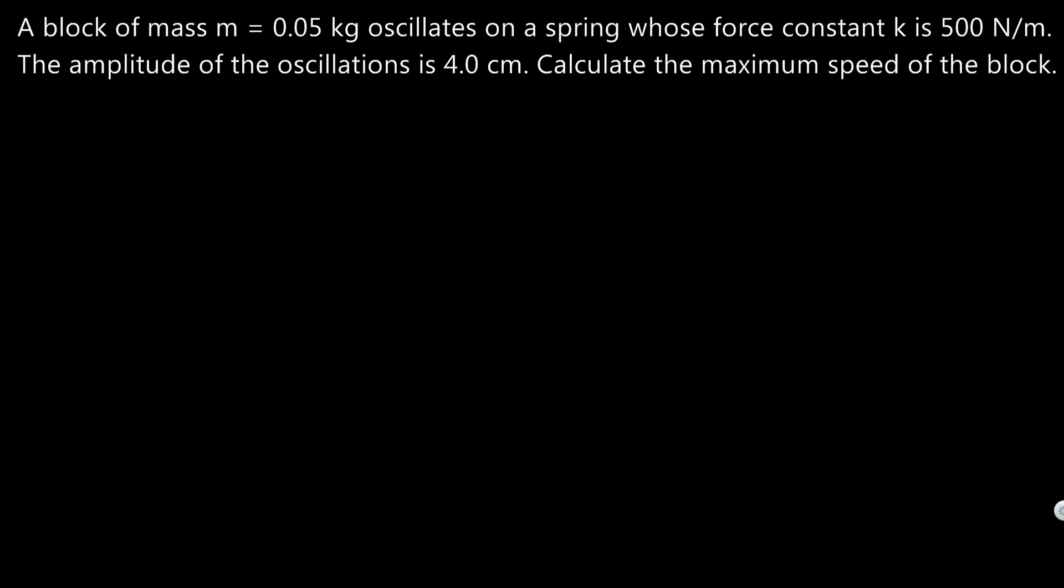A block of mass m equals 0.05 kilograms oscillates on a spring whose force constant is k equals 500 newtons per meter. The amplitude of the oscillations is 4 centimeters. Calculate the maximum speed of the block.